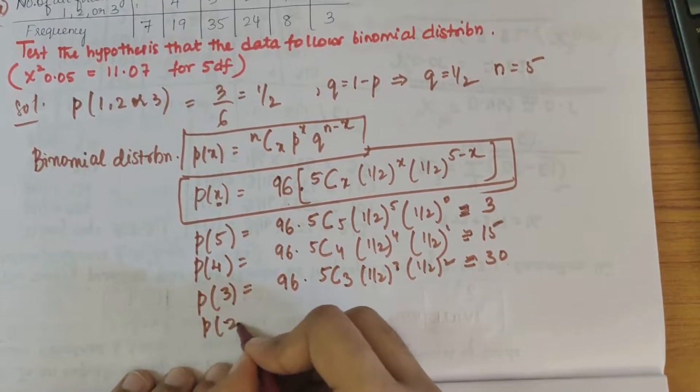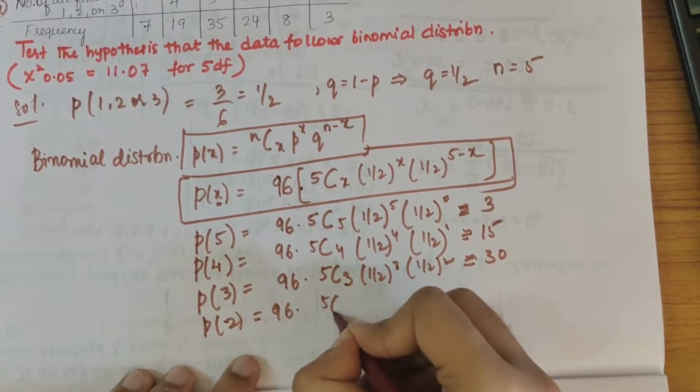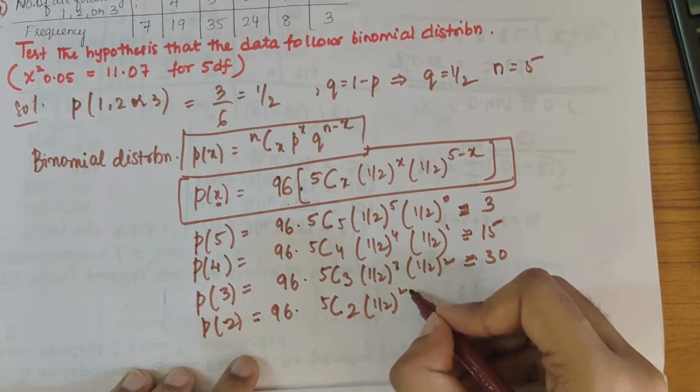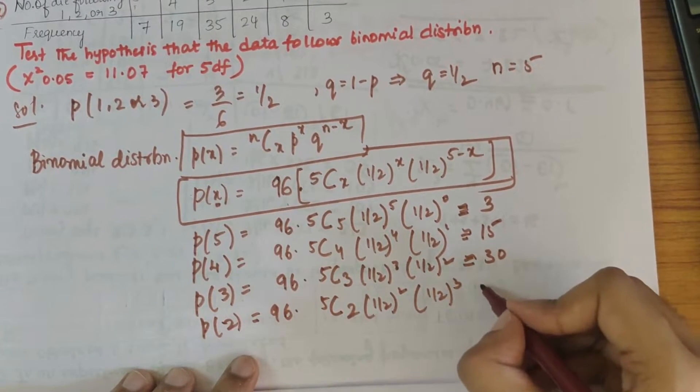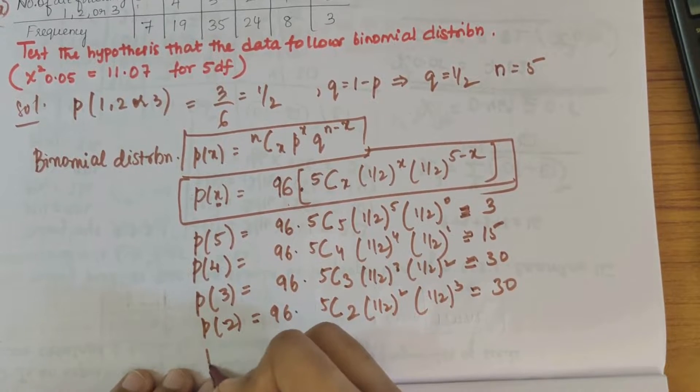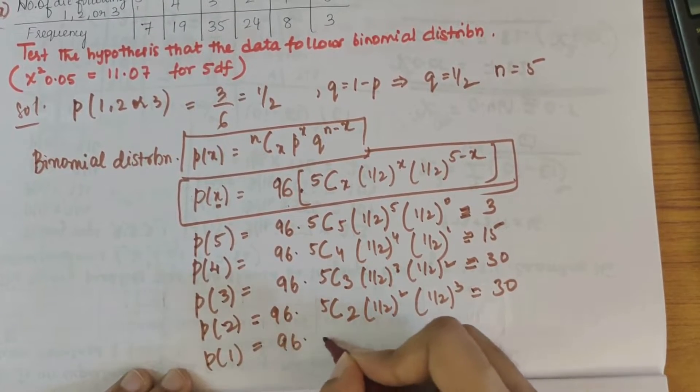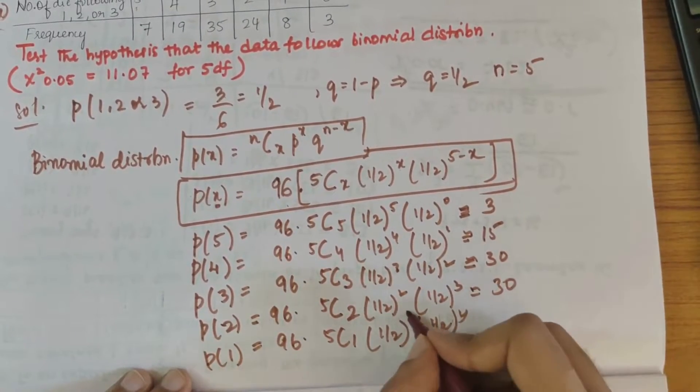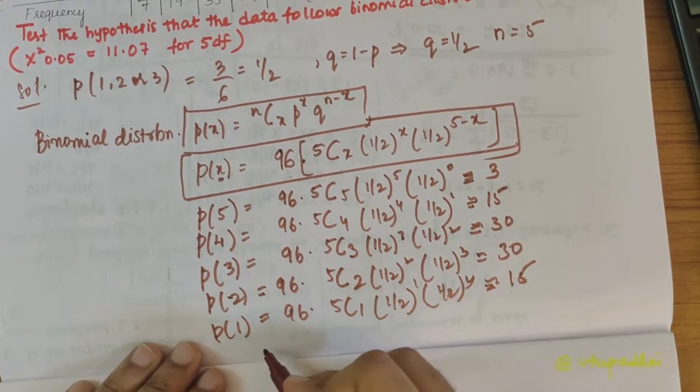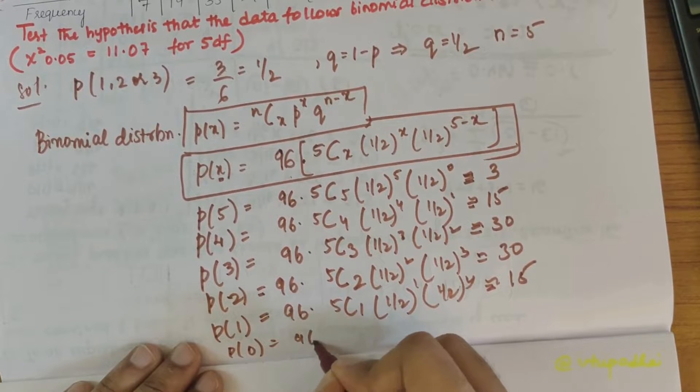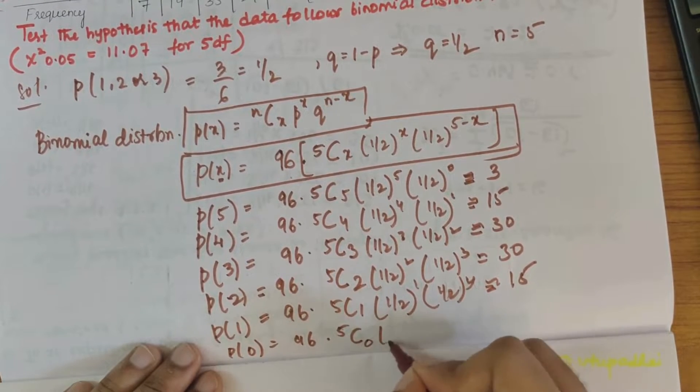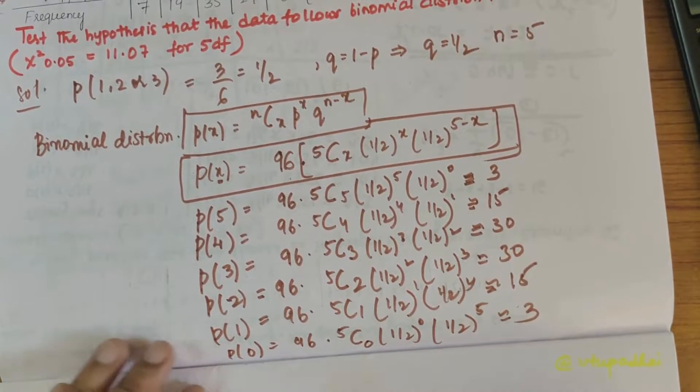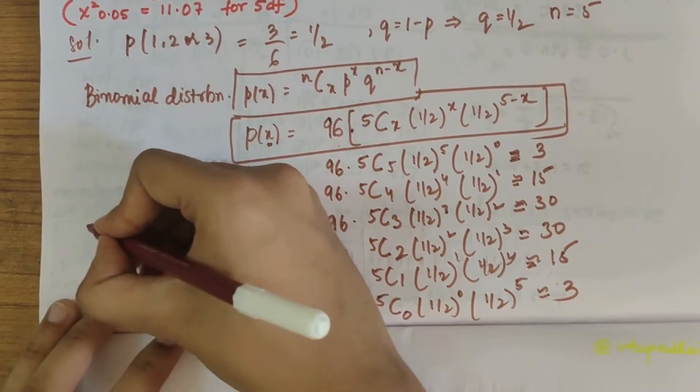Next we have p(2) equals 96 times 5 choose 2 times 1 by 2 squared times 1 by 2 squared times 1 by 2 cubed, which is 30. Then p(1) equals 96 times 5 choose 1 times 1 by 2 times 1 by 2 to the 4, which is 15. Next we have p(0) equals 96 times 5 choose 0 times 1 by 2 to the 0 times 1 by 2 to the 5, which is 3. So we have found out the estimated frequencies.